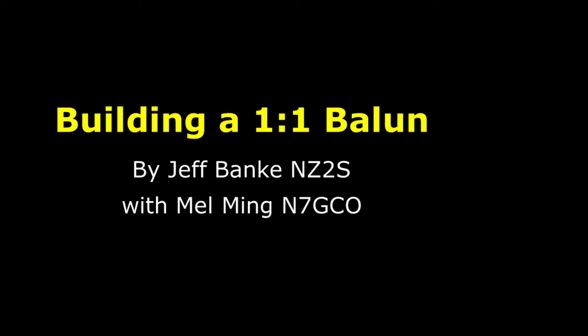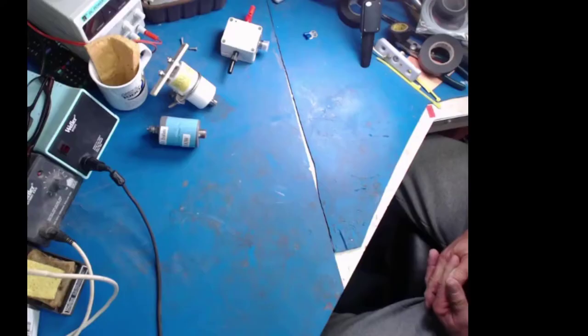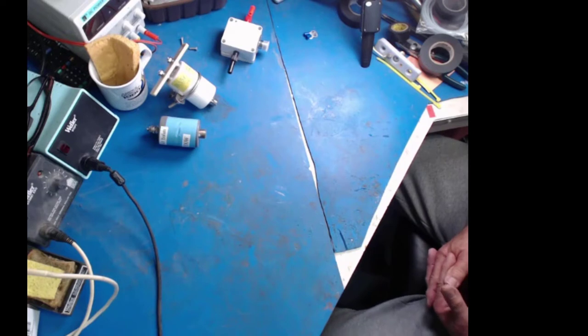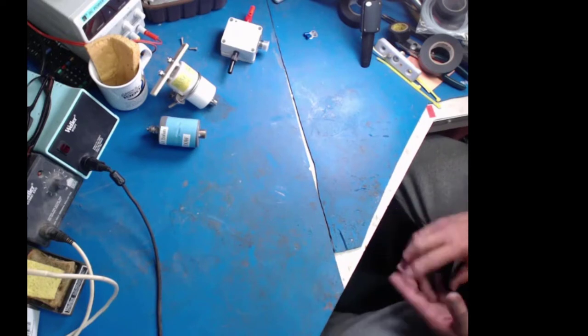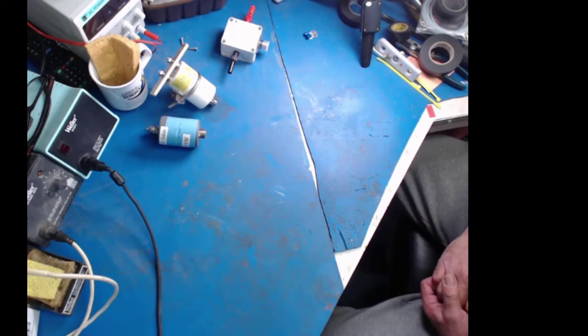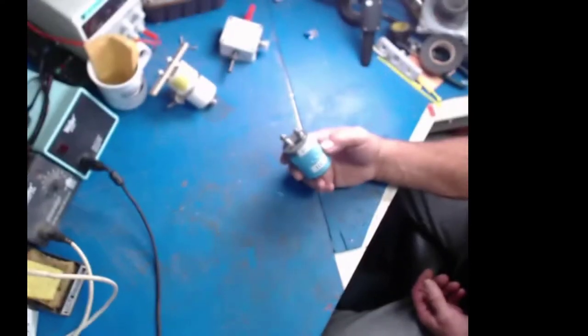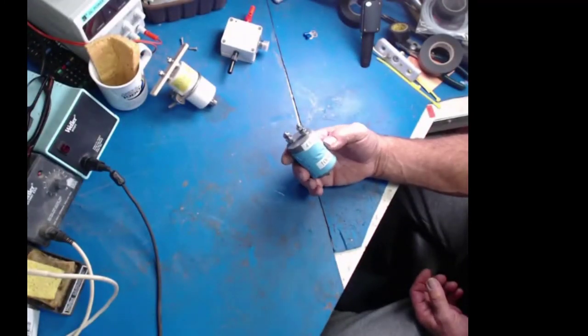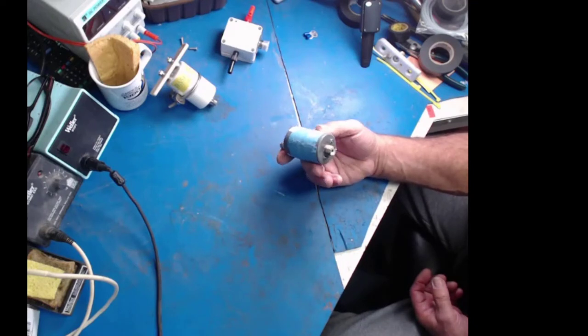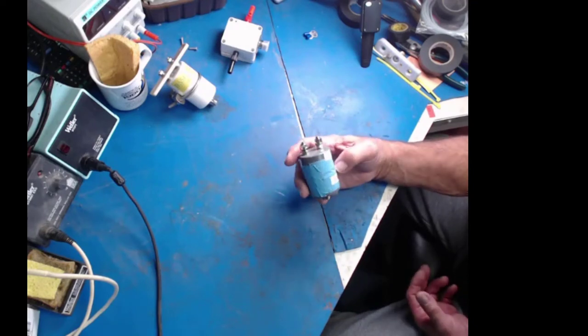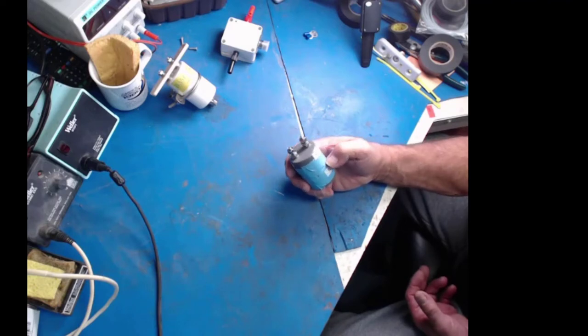This is a 1 to 1 Guanella balun and I first wanted to show people some of the mistakes that one can make in purchasing constructed baluns from across the pond. This one, for example, happens to be a 4 to 1 balun. It has an open circuit in it that just indicates the quality control is not quite up to par.